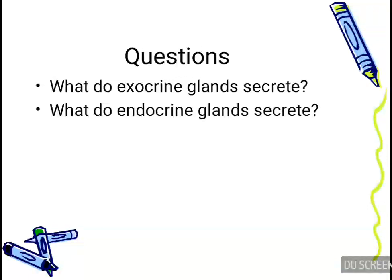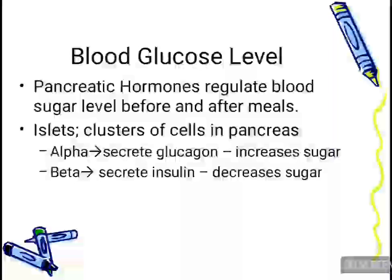What do endocrine glands secrete and what do exocrine glands secrete? If you are able to answer those questions, let's continue. Now let's talk about blood glucose levels. Pancreatic hormones regulate blood glucose sugar levels before and after meals.